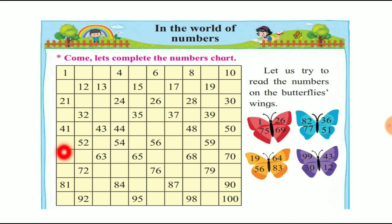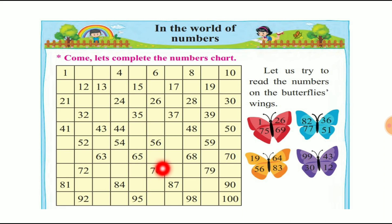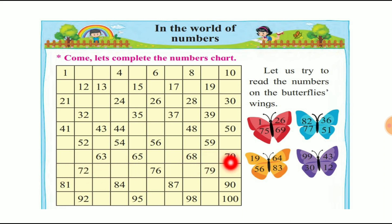Next: 61, 62, 63, 64, 65, 66, 67, 68, 69, 70. So there are 61 to 70 numbers in serial order.